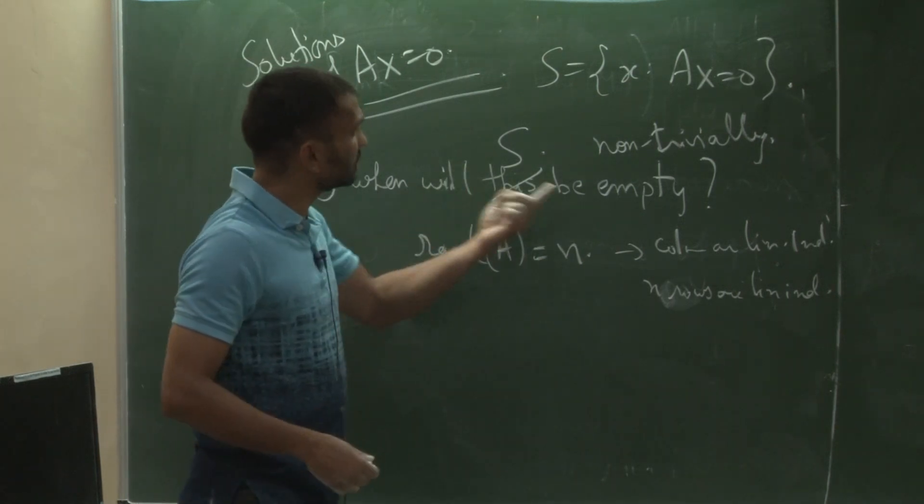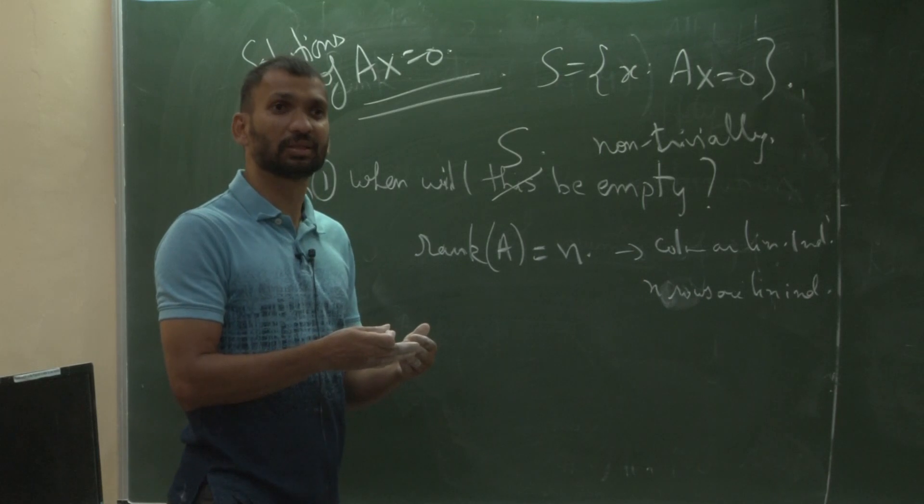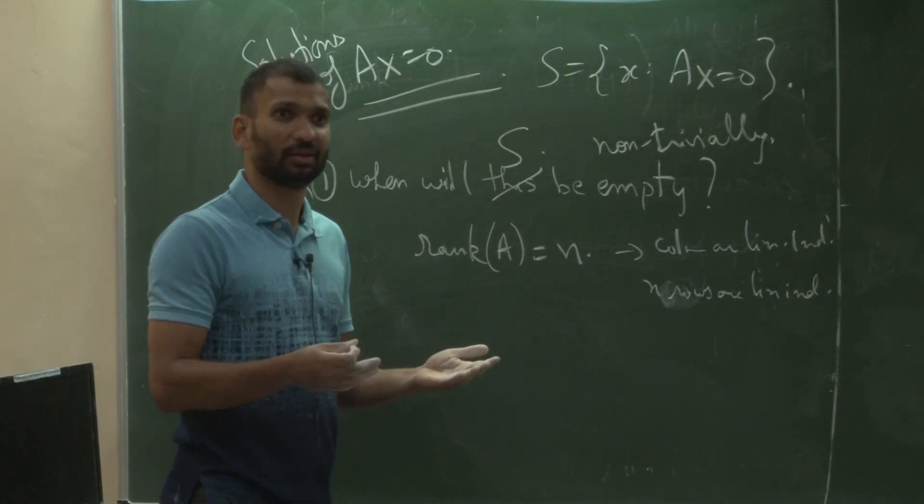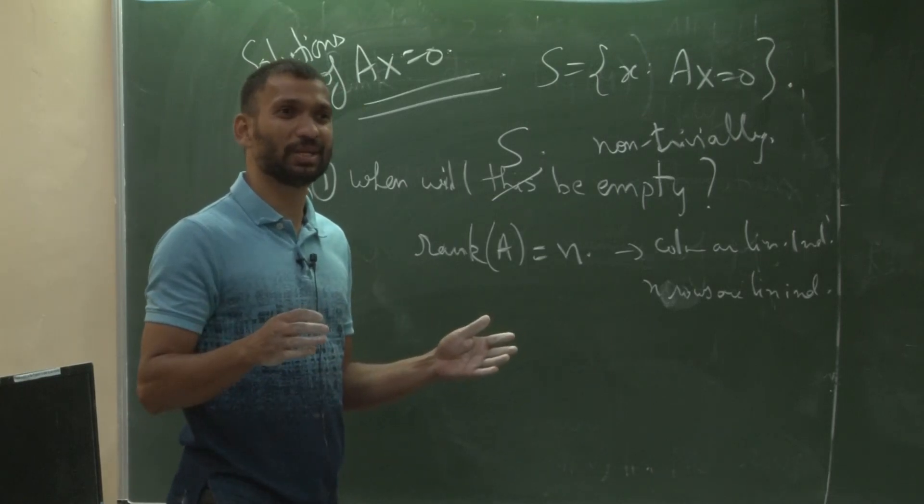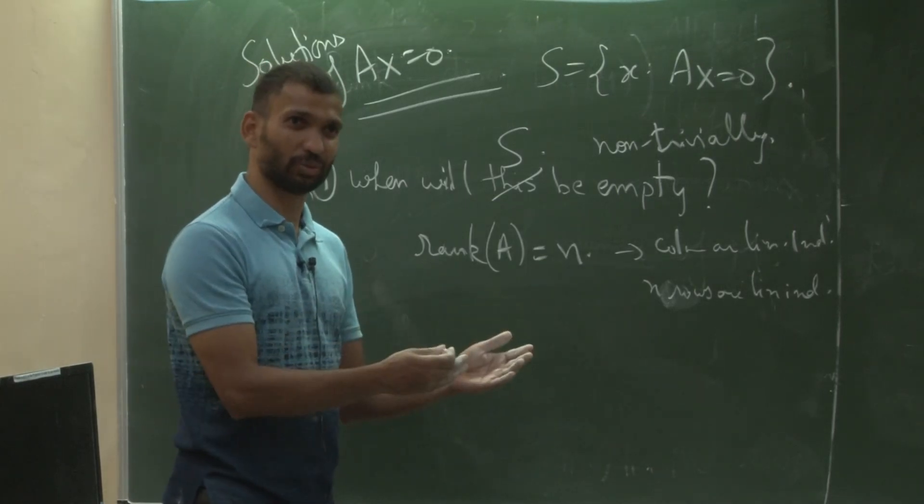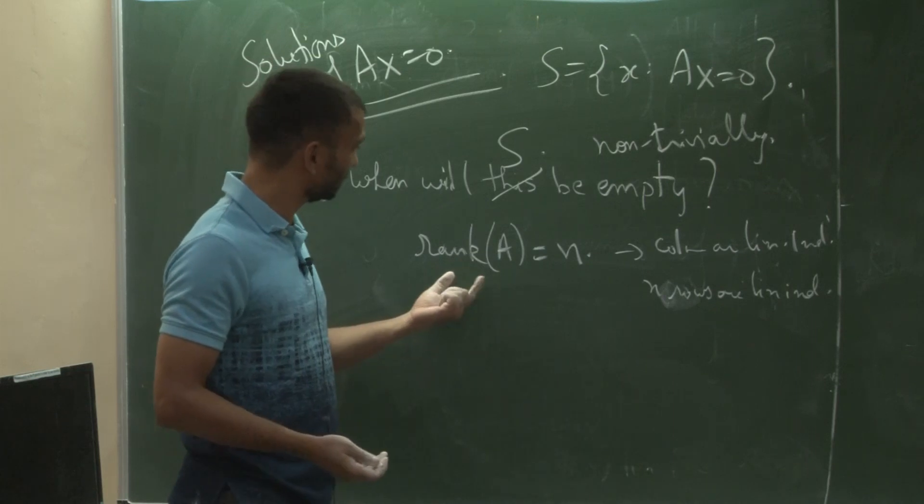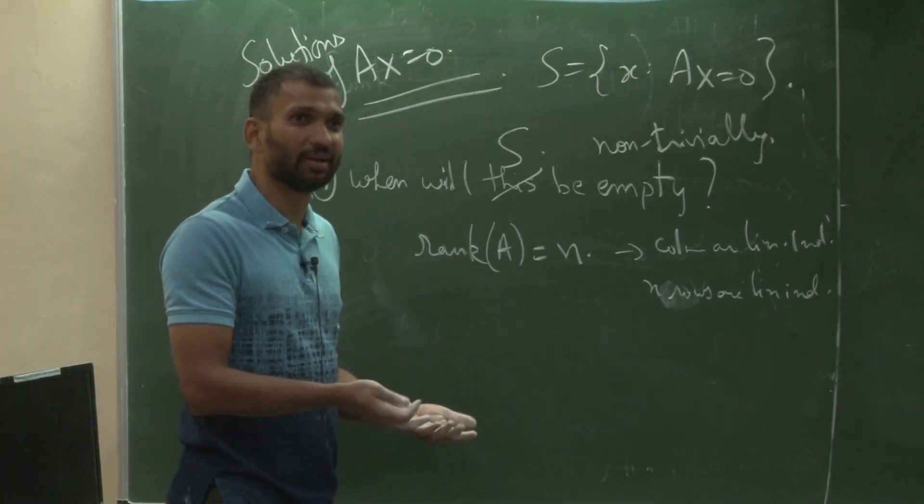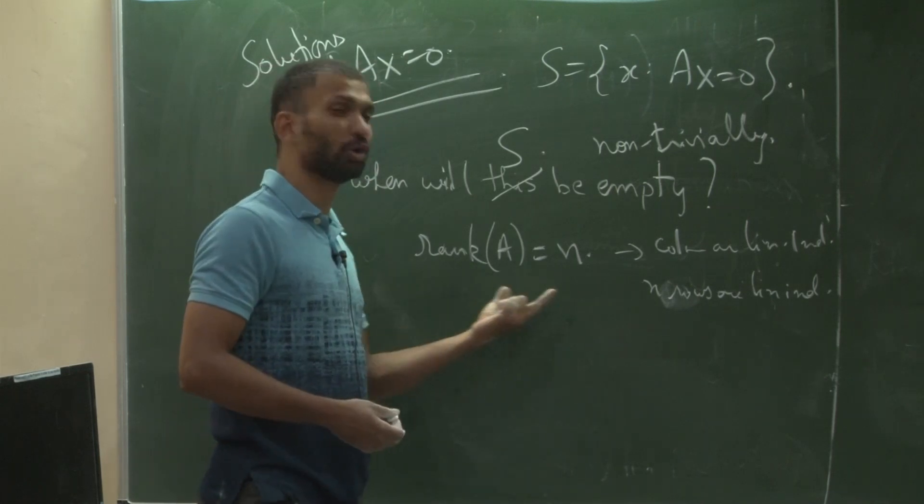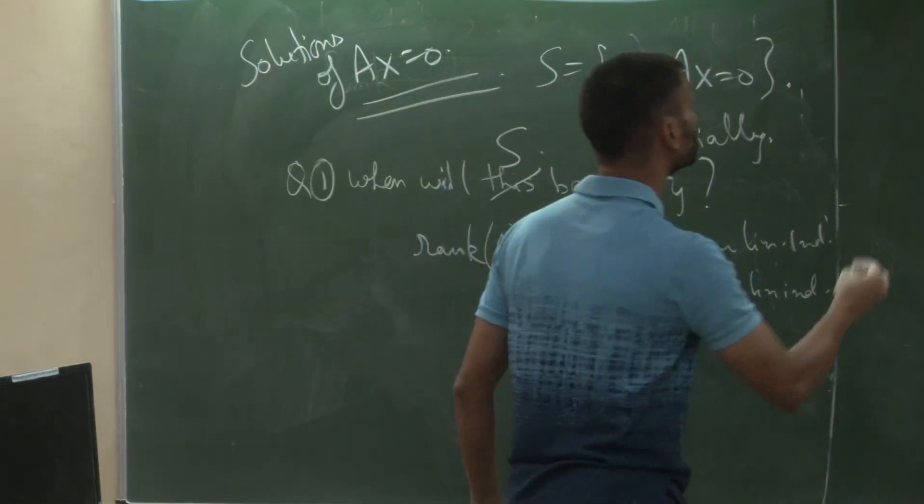Because S being empty means kernel is phi with 0, so the dimension of that subspace is 0. That means the size of the images or dimension of the image is n. Dimension of the image being n means rank of n means rank of A is so great.